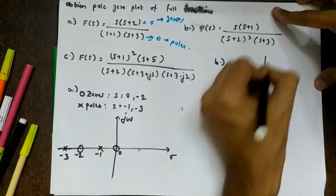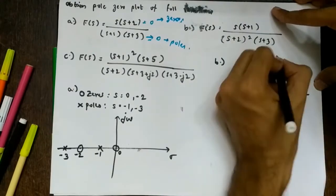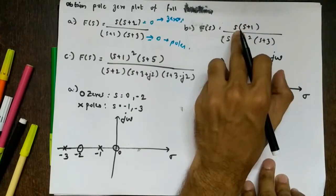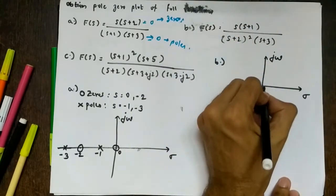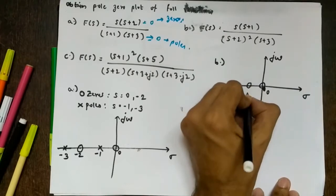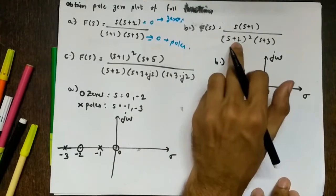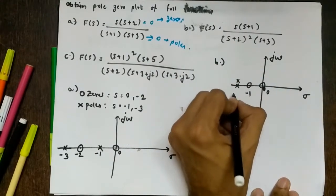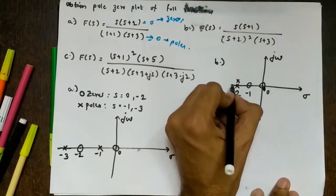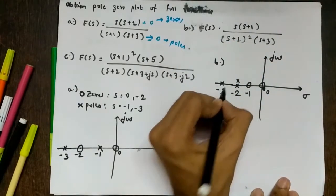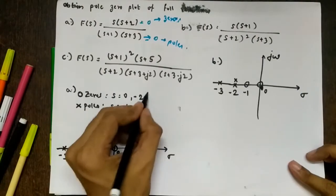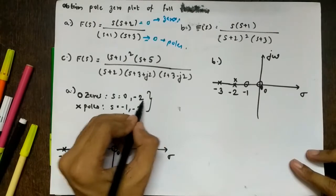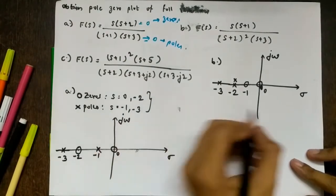For part B, we again draw the σ–jω axis. The zeros are at s = 0 and s = −1. There are two poles at s = −2, shown as a double cross, and another pole at s = −3. So zeros are at s = 0 and s = −1, while poles are at s = −2 (double) and s = −3.